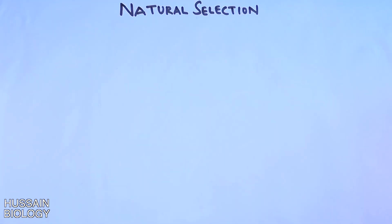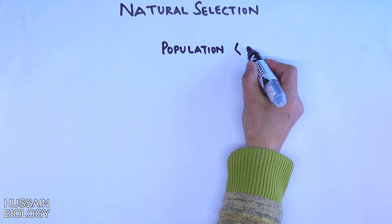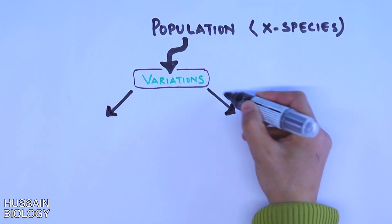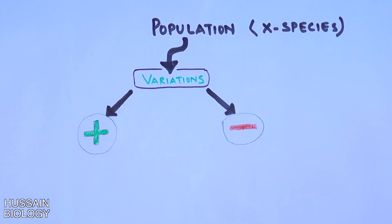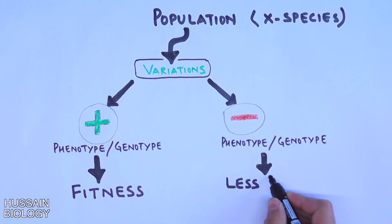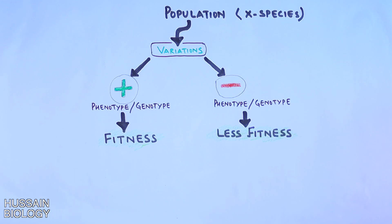Now let's understand natural selection further. Suppose we have a population of species X, and this population has different types of variations — positive and negative. Positive variations benefit the species within the population, while negative variations are injurious or harmful. Both types of variations can be phenotypic or genotypic. Furthermore, positive variation adds to the fitness of an individual whereas negative variation adds less fitness.